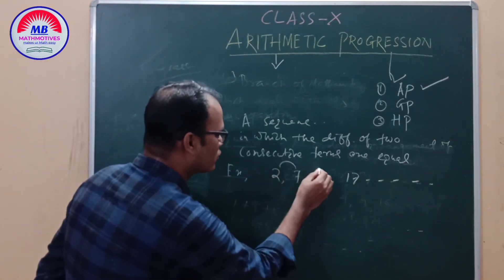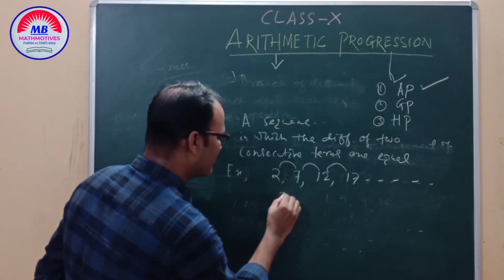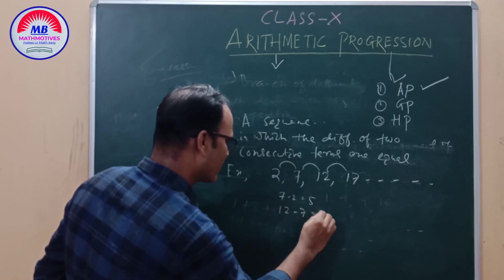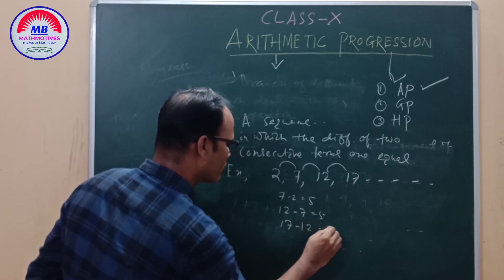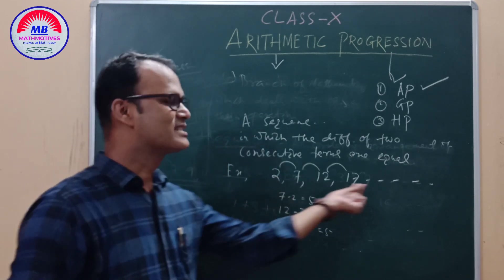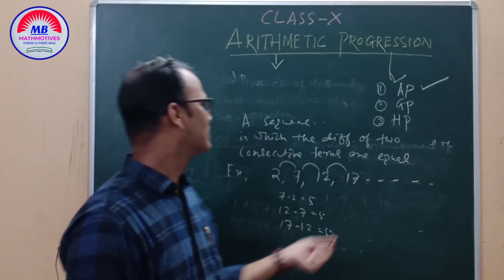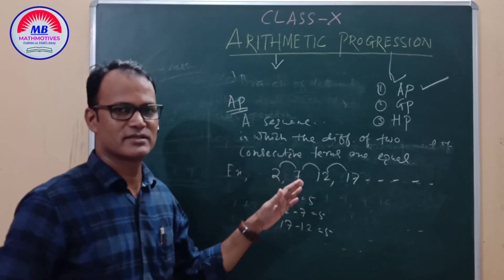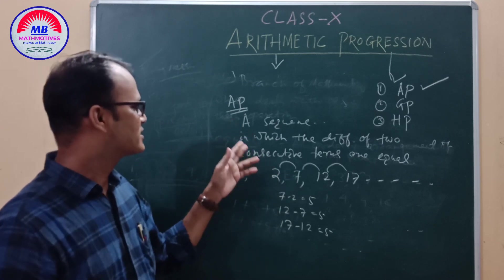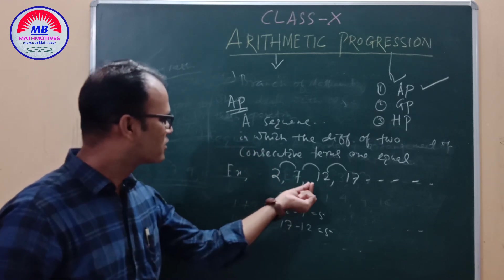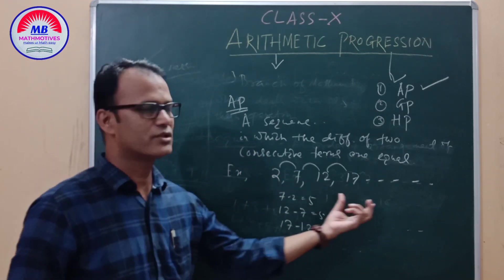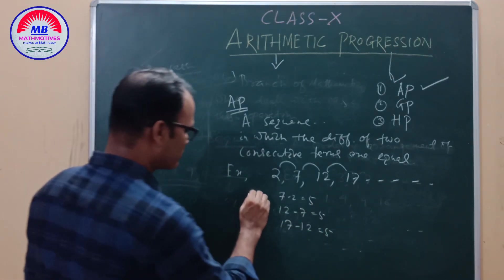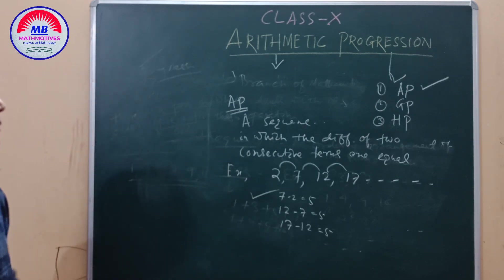You see here — the difference between two consecutive terms: 7 minus 2 is 5, 12 minus 7 is 5, 17 minus 12 is 5. So this sequence is in AP. AP is the sequence in which the difference between two consecutive terms is equal.